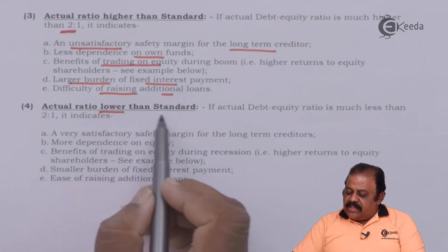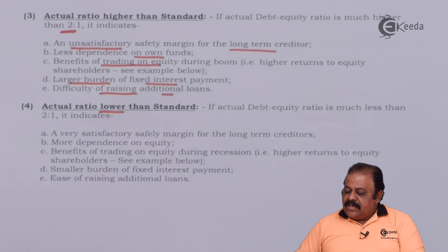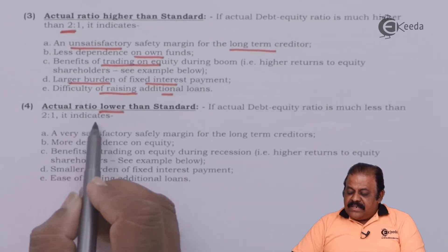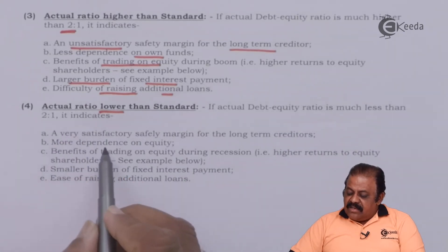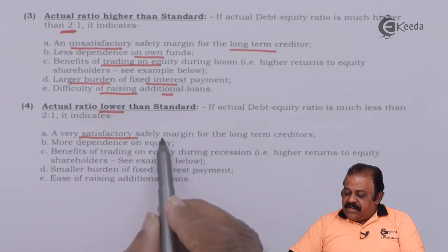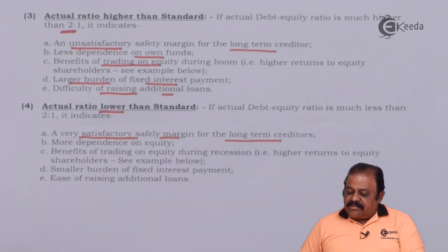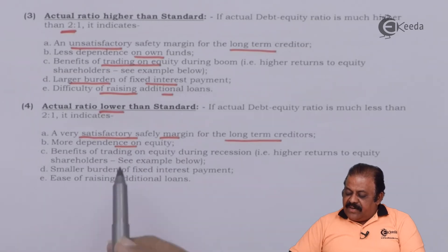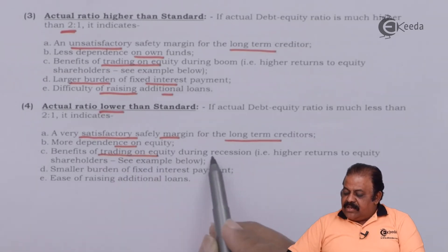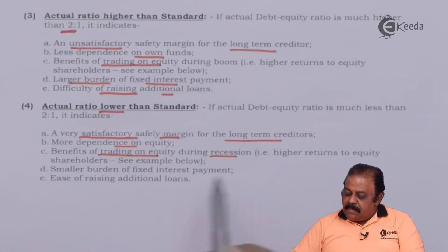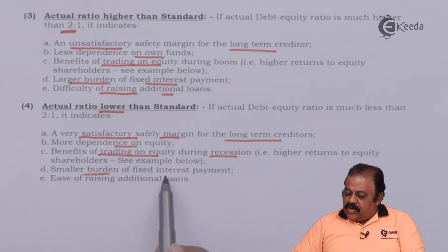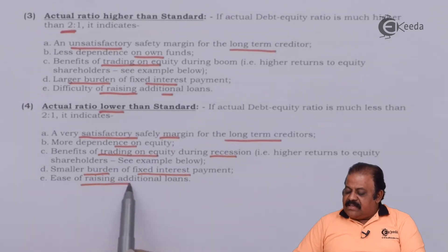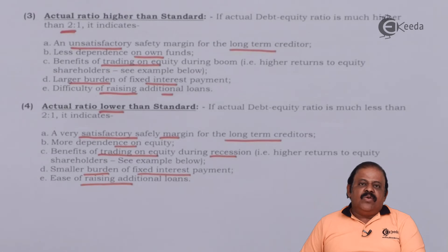If the actual debt equity ratio is much less than 2 is to 1, it indicates a very satisfactory safety margin for long-term creditors, more dependence on equity, benefit of trading on equity during recession, a smaller burden of fixed interest payment, and ease of raising additional loans.